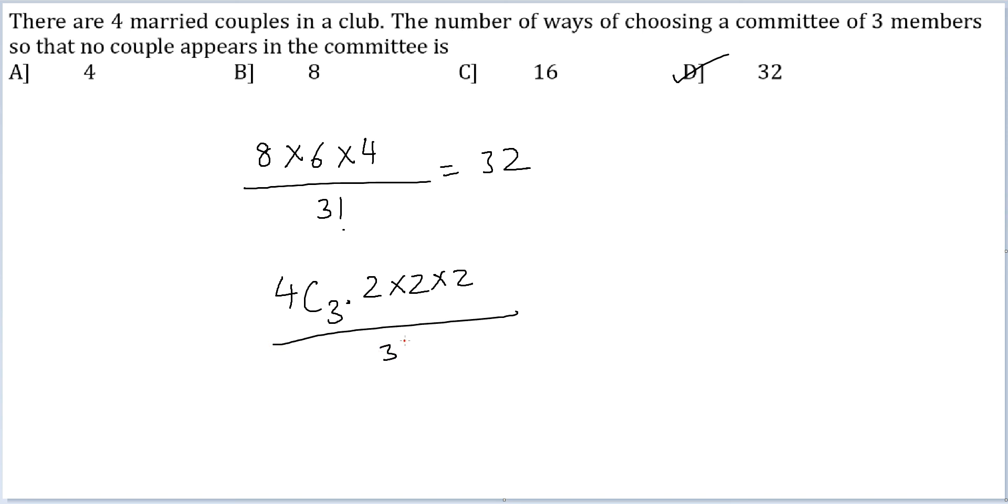And then divide this by 3 factorial again. Sorry. This time you don't have to divide by 3 factorial. This should also lead you to the answer. 4 into 3 is 4 into 8 again. Your answer will be 32.